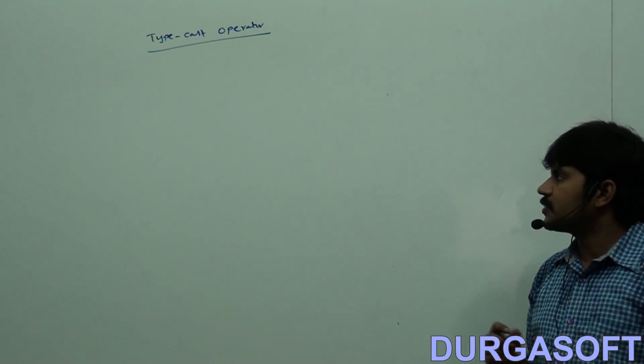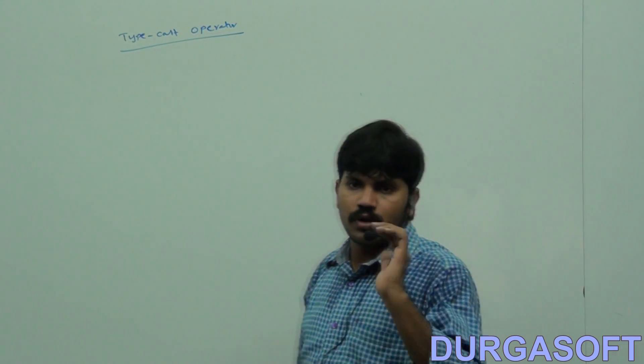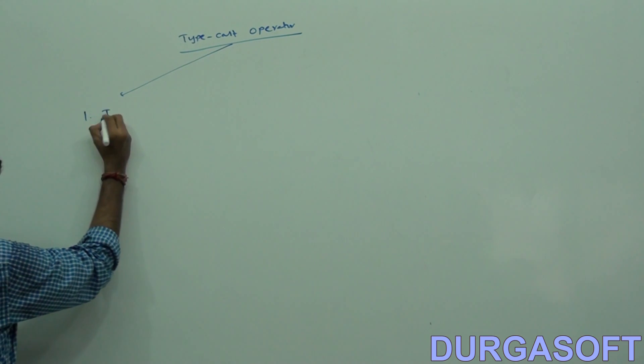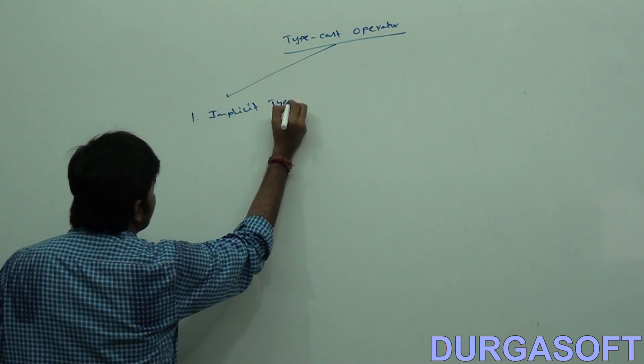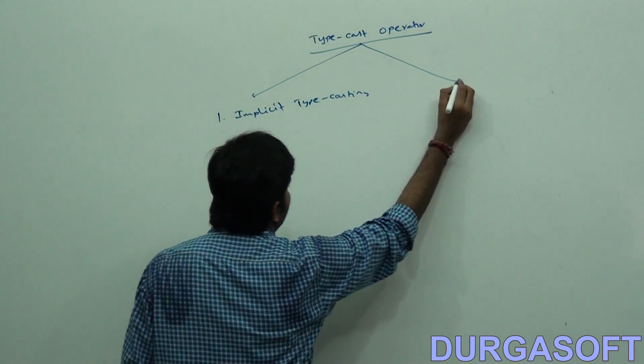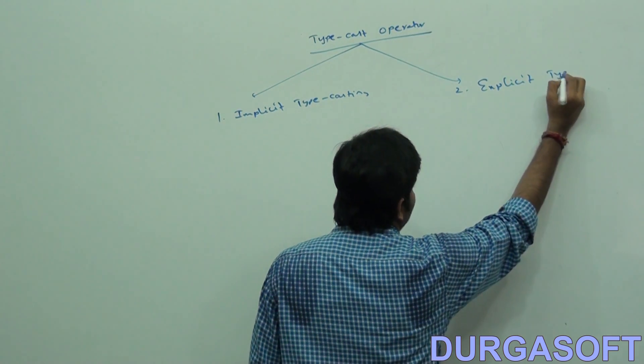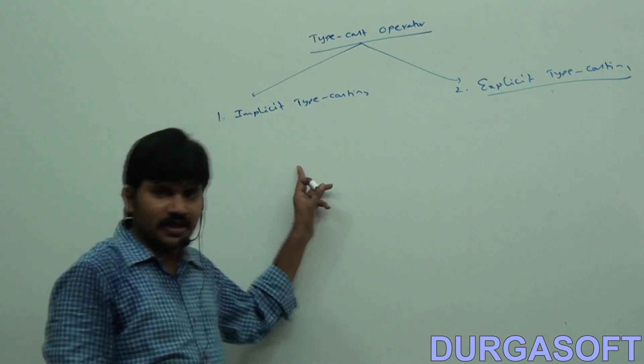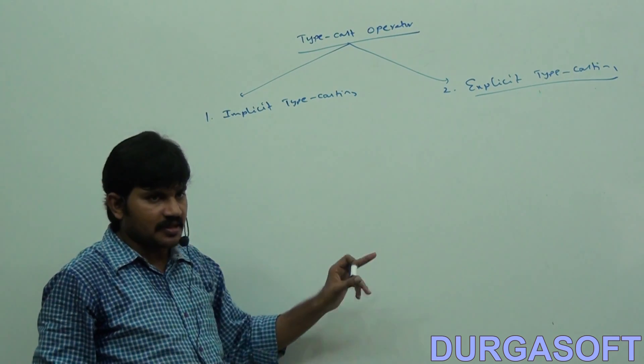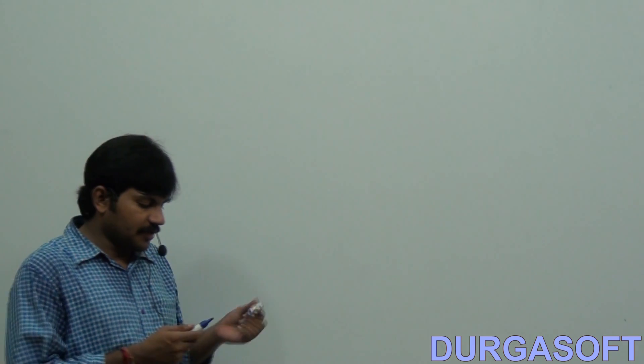There are two types of typecasting. The first category is implicit typecasting. The second category is explicit typecasting. We will discuss what implicit and explicit mean. Just observe: there are two types of typecasting — implicit typecasting and explicit typecasting.